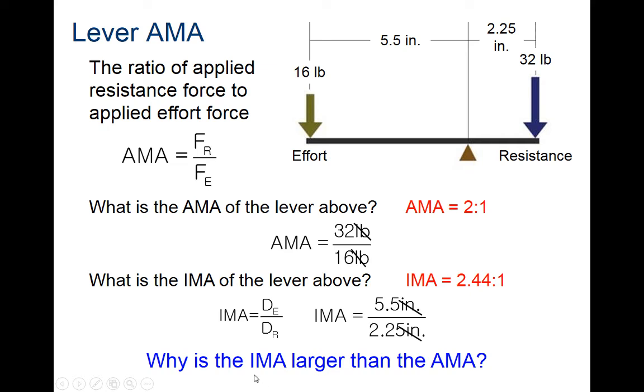The ideal mechanical advantage is a little bit bigger than the actual, which makes sense because in an ideal world, we don't have friction. Friction is taking away some energy, which reduces our mechanical advantage.